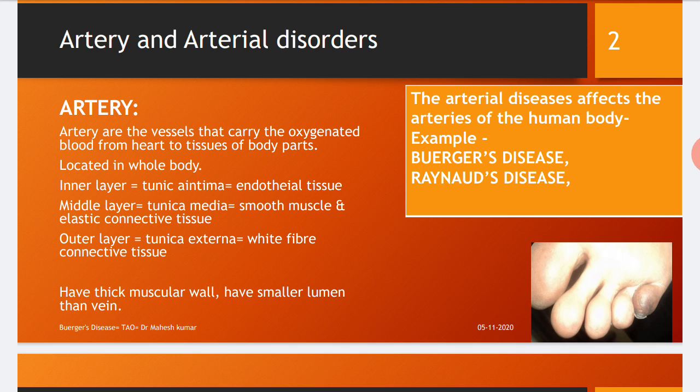The inner layer is the tunica intima, which is the endothelial layer tissue. The middle layer is the tunica media, made up of smooth muscle and elastic connective tissue. The outer layer is the tunica externa, made up of white fibrous connective tissue. The artery has a thick muscular wall compared to veins and has a smaller lumen than veins.